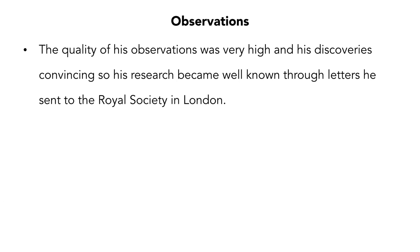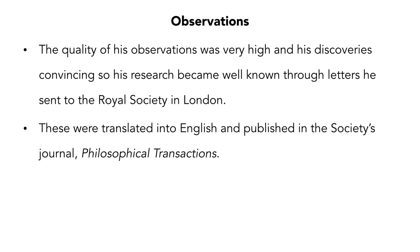Because the quality of Leeuwenhoek's observations was very high and his discoveries were convincing, his research became well known through letters he sent to the Royal Society of London. At that time, Robert Hooke was President of the Royal Society. He read the letters himself, studied Dutch to do so, translated the letters into English, and published them in the Royal Society's journal, the Philosophical Transactions.